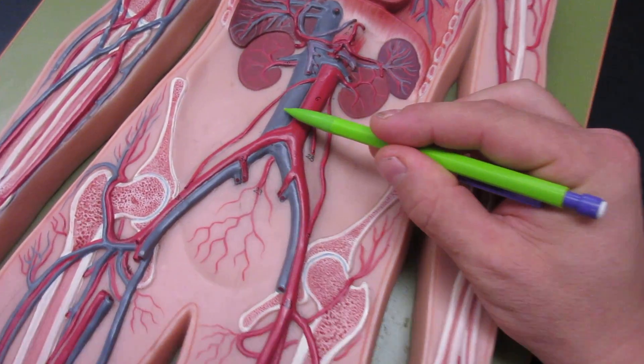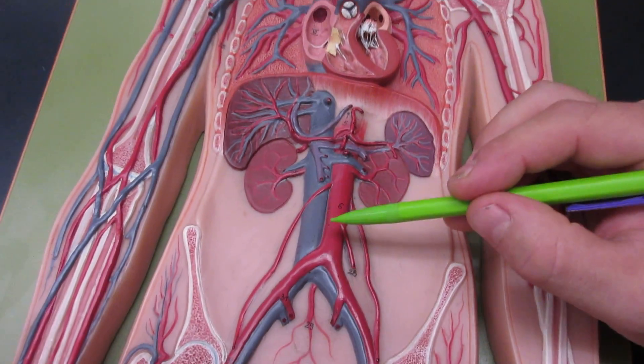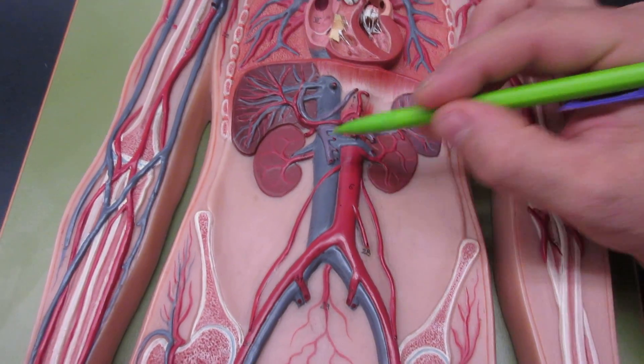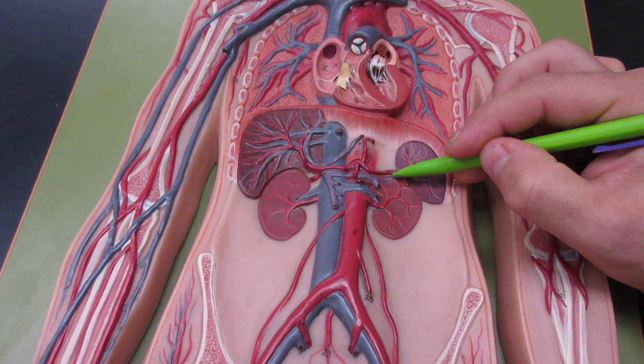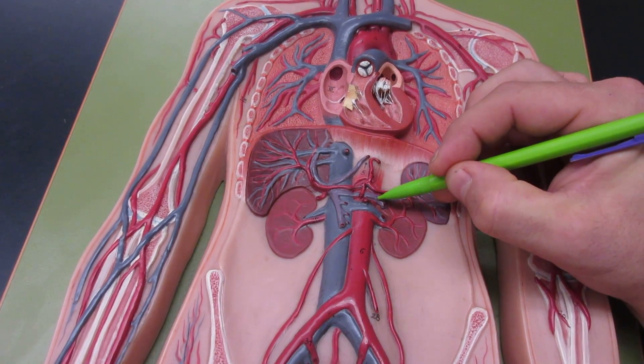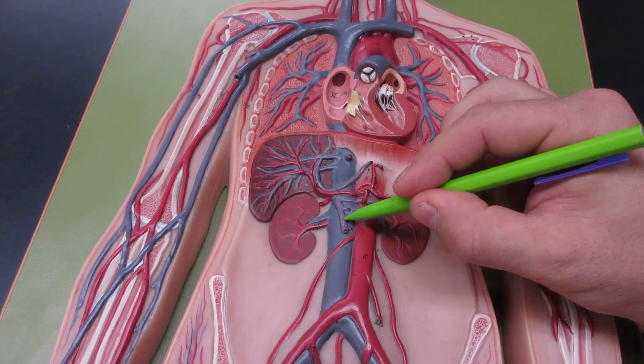You have coming from the kidneys the renal veins, coming from the spleen the splenic vein, this is the gastric vein, this is the inferior mesenteric, the superior mesenteric vein, and right here is the hepatic portal vein.